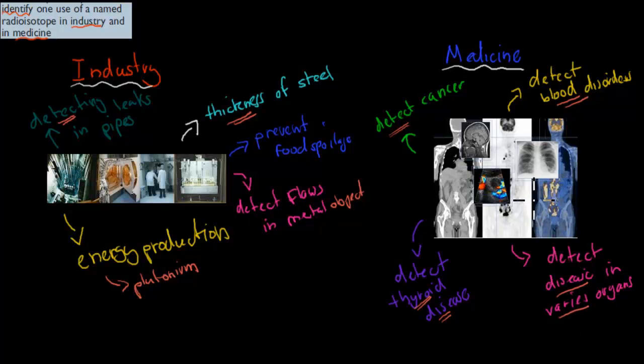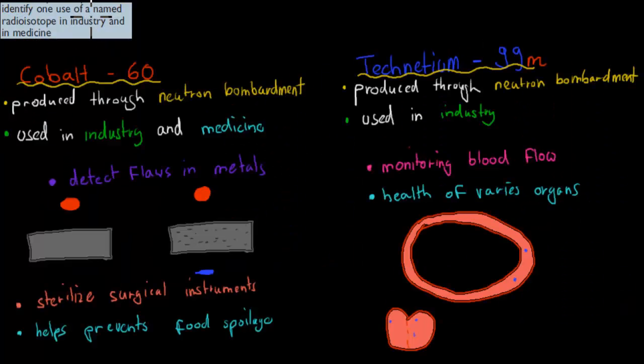These are just some of the uses. There's quite a few more as well. But these are some of the uses of radioisotopes in both industry and medicine. And now we're going to go over the specific examples that we have to. Because we have to have a name. So it says named radioisotope. So these are actual examples. So we need to have two. One for the industry and one for the medicine.